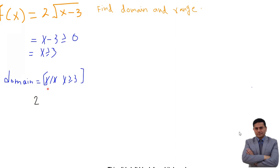Now to find out the range, we need to input x equal to 3 in the function. Yes, x has been replaced by 3, so 3 minus 3 will give you 0.